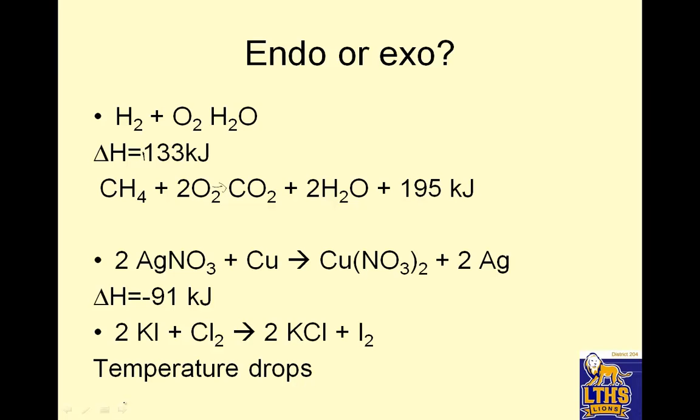Endo or exo. Positive delta H is endothermic because heat is going into the reactants. Heat is a product, meaning heat is coming out. It's exo. Delta H is negative, meaning my reactants are losing heat. Exo.